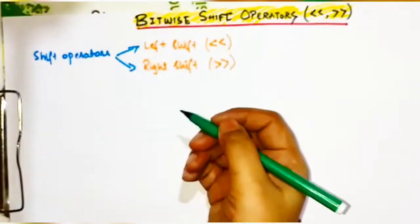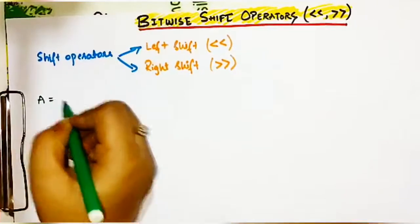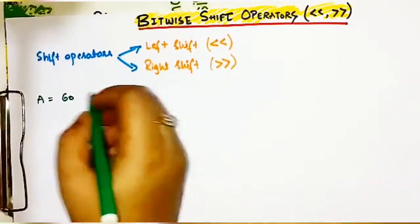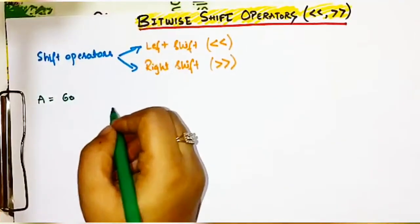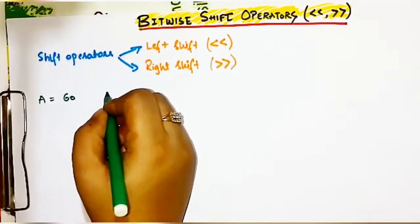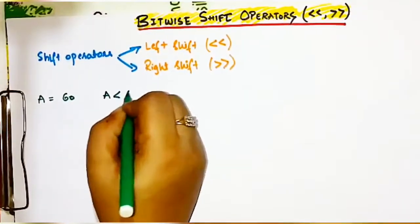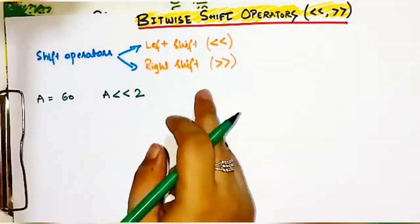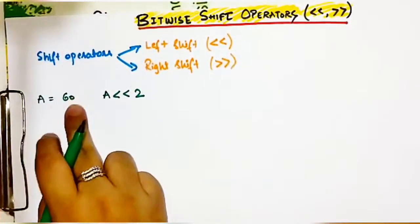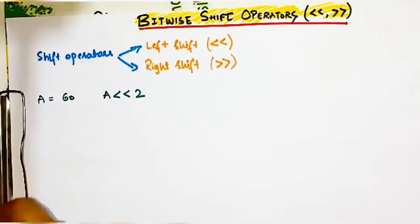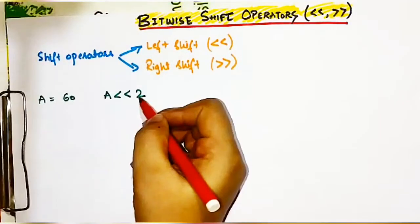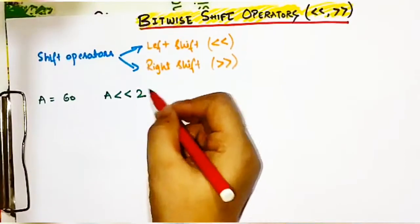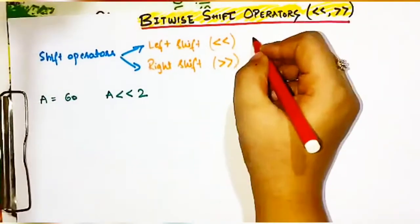Suppose you are given the number 60 and the question asks you to find the left shift of 60 — written as 60 << 2 — meaning you have to left shift this number by two. You can calculate this directly without converting the number into binary. Basically, left shift is simply multiplication by two to the power of that number.